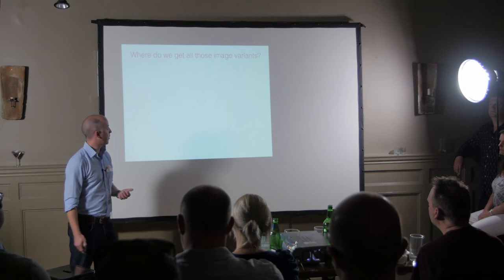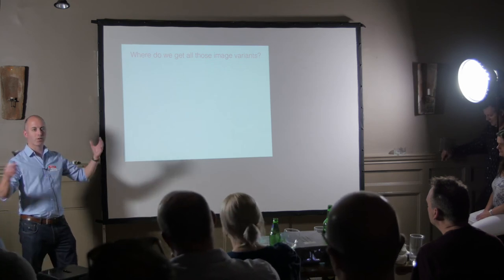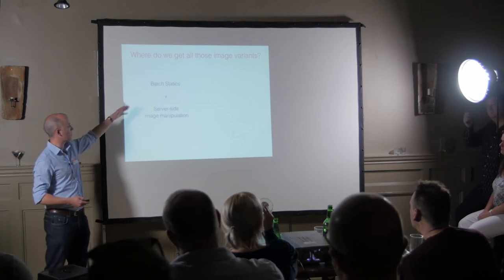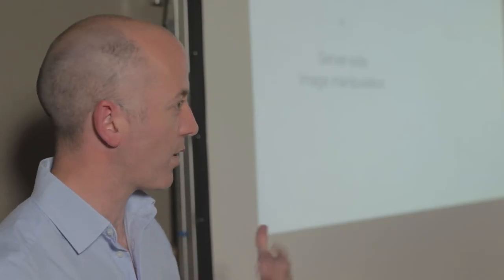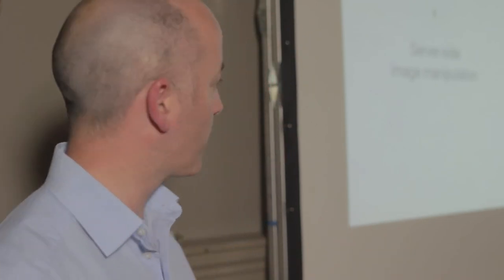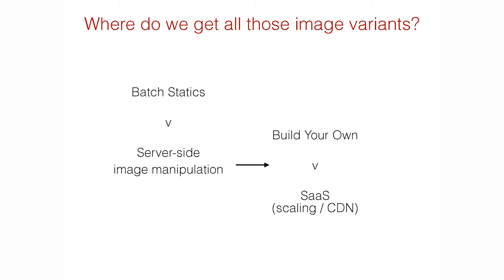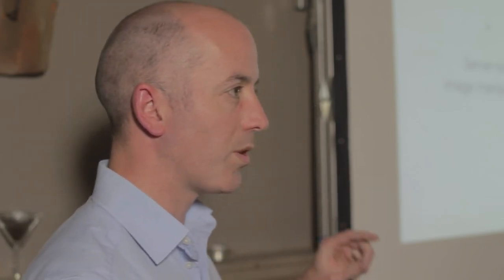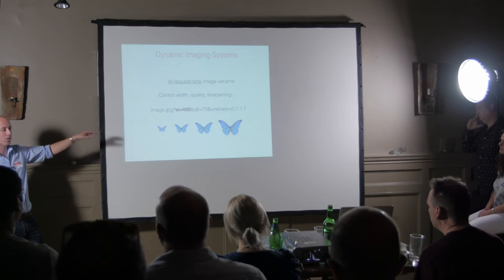So where do you get these images from? If it's a small site with maybe 20 images you can probably do it in Photoshop — batch processing, Photoshop's built-in scripting with JSX files, or on a Mac with Automator you can write a rule that watches a folder and resizes images. Some people go down the server-side manipulation route. I want to talk briefly about dynamic imaging — even though I've worked in it for a long time, almost nobody has heard of it because it's been very niche, only in e-commerce.